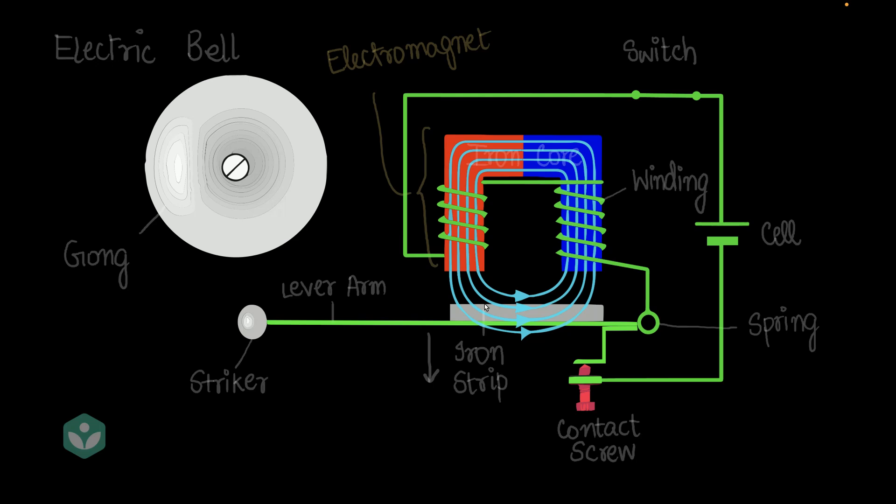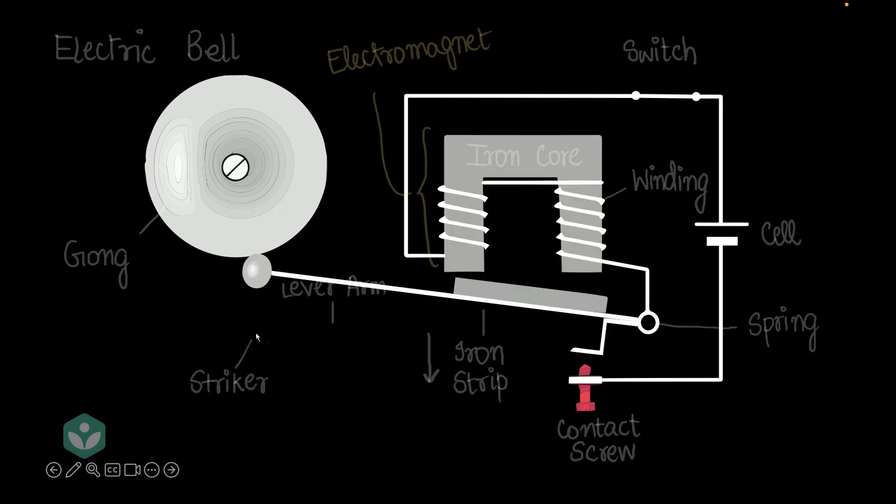And in this case, when that happens, the iron strip would want to move upwards. And when the force of attraction due to the electromagnet is greater than the force with which the spring is pulling this lever arm down, what's going to happen? This lever arm is going to move upward. And then the striker is going to strike the gong.